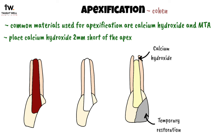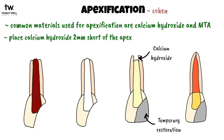After 6 months, the patient is recalled for a follow-up. If there is evidence of root development being complete, then the tooth is re-entered and conventional RCT is done.